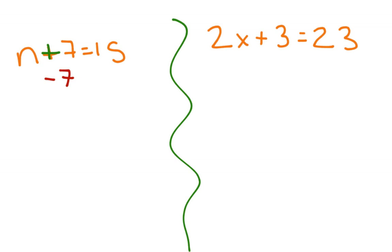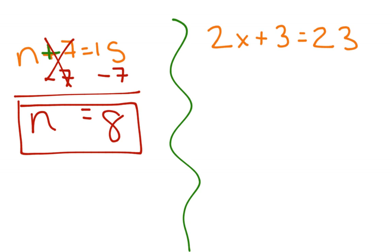And whatever we do to one side of the equal sign, we have to keep it balanced by doing the exact same thing on the other side of the equal sign. So this makes our plus 7 cancel and leaves us a value of 0, which we don't have to write. So we'll re-put the n, bring the equals straight down, and then on the other side we have 15 minus 7, which equals 8. So our solution there is n equals 8.